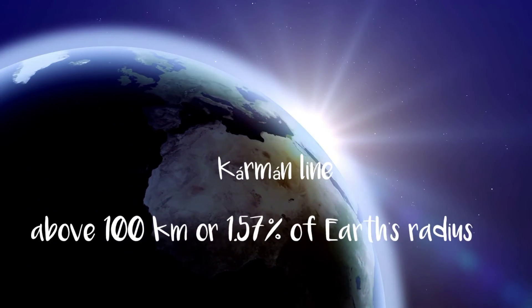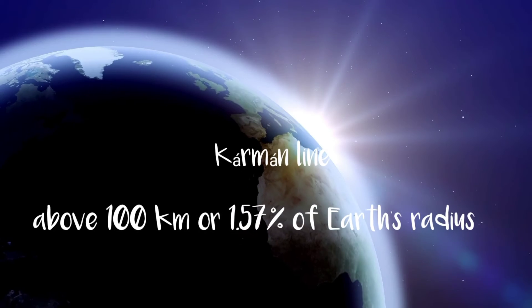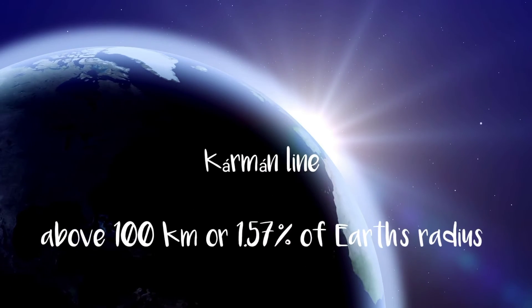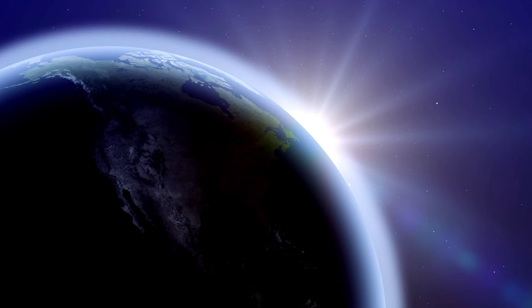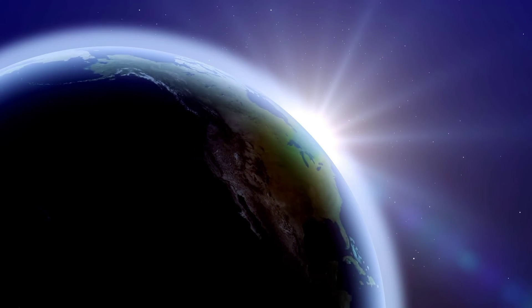The Karman Line, at 100 kilometers or 1.57 percent of Earth's radius, is often used as the border between the atmosphere and outer space.